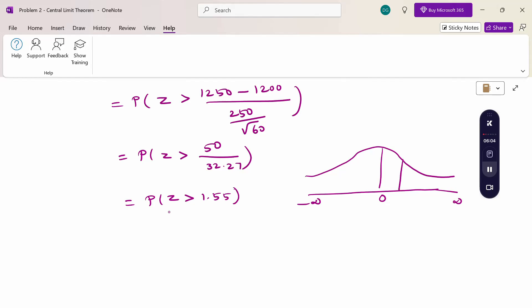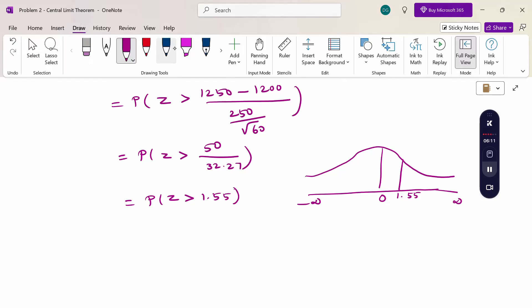This is the range going up to infinity. But from the table it is difficult to calculate 1.55 to infinity. Therefore, how to calculate? The whole value from 0 to infinity on the right hand side is 0.5. Therefore, subtract: 0.5 minus (0 to 1.55).